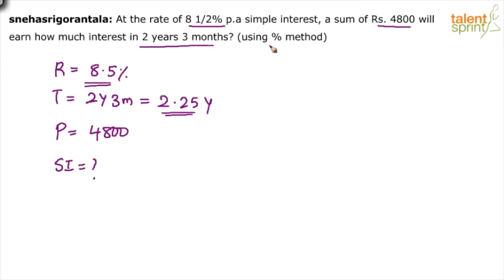You want me to do it using percentage method. So, you have to be sharp in calculations there. If you cannot do the calculation easily without paper, then there is no point in using percentage method here. Then you better use the formula PTR by 100. But anyway, according to the percentage method that we have discussed, what do we do?